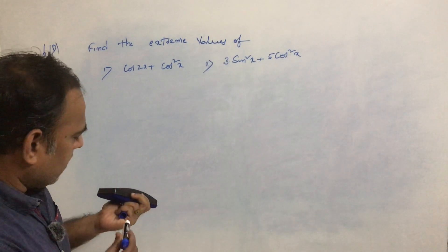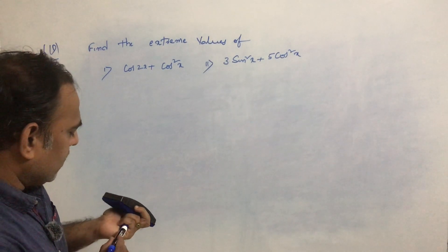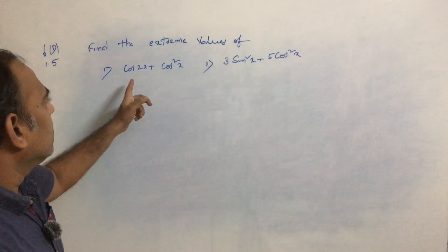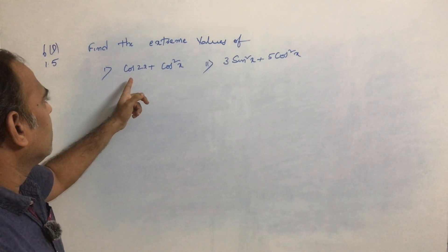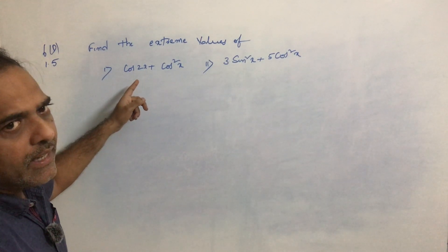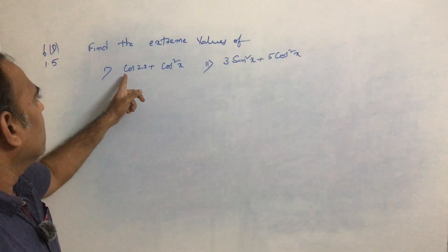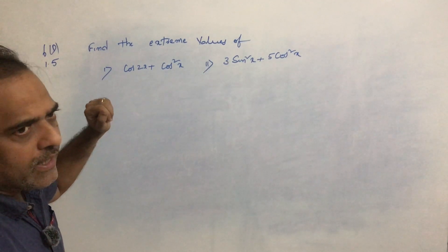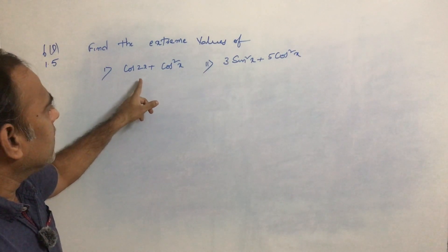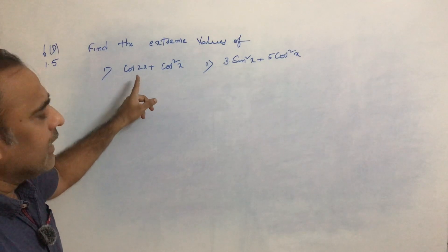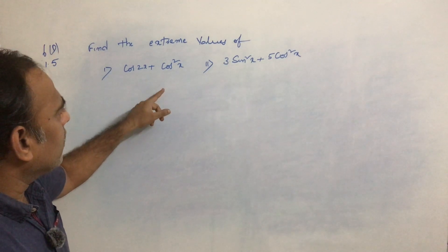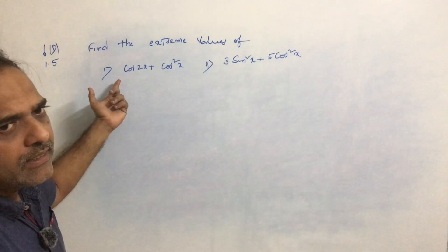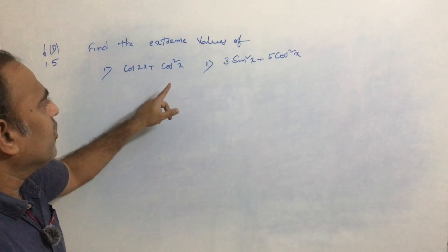To solve this type of problem, we first need to convert the given equation into homogeneous form. Taking cos2x plus cos²x, we need to convert this into either cosx, cos²x, cos³x, sinx, sin²x, or sin³x.